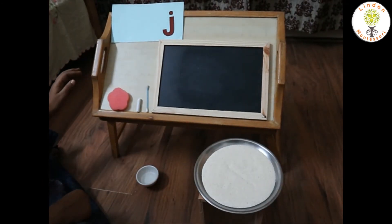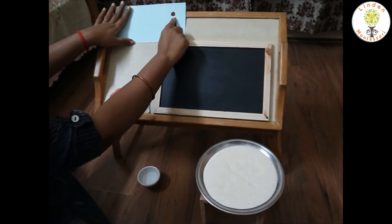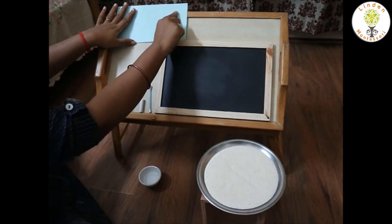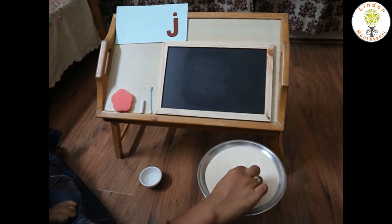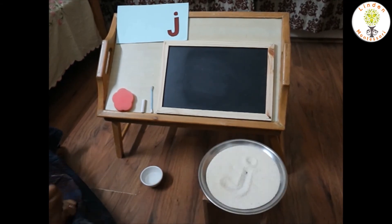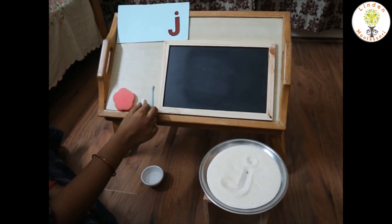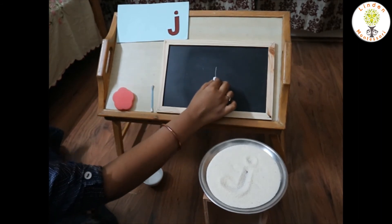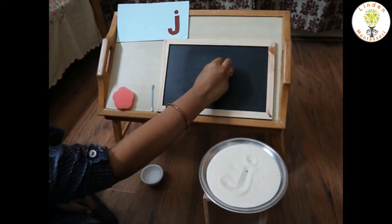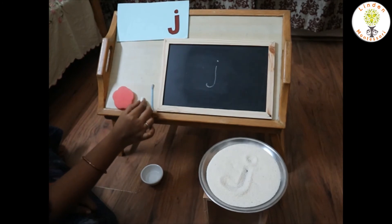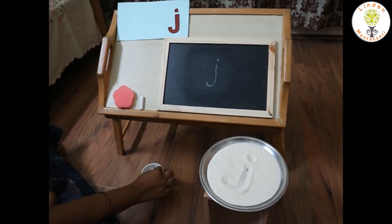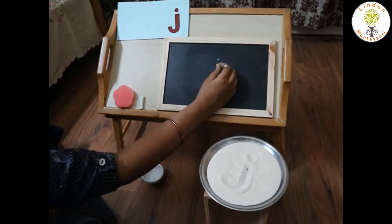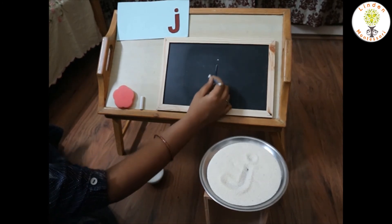Let's trace the sound and say the sound. J. Your child can trace the sound in semolina tray by saying it. J. He can write it if he is ready to write on the slate by saying the sound J. Or you can write it for him and he can dip the q-tip in water and trace it by saying the sound J.